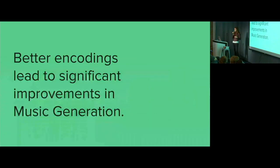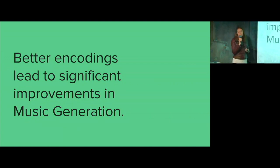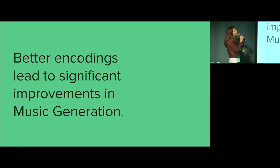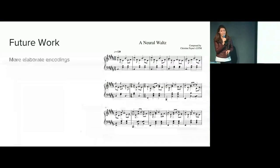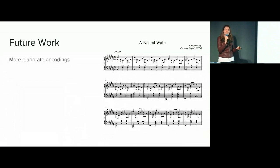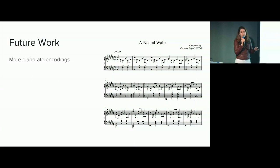Wrapping up, my thought is that these better encodings really do lead to better music generation when you're dealing with neural nets. What I'm looking at in the future is trying to come up with more creative encodings — right now I'm working on branching out past classical music and encoding lots of different instruments.